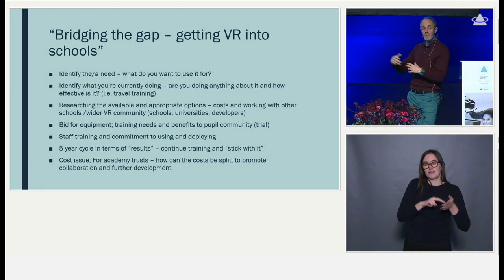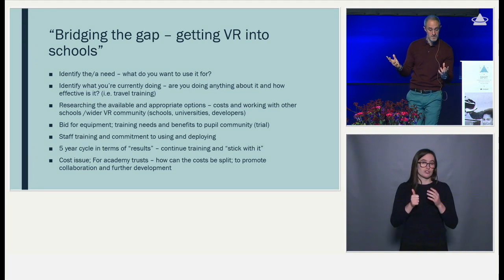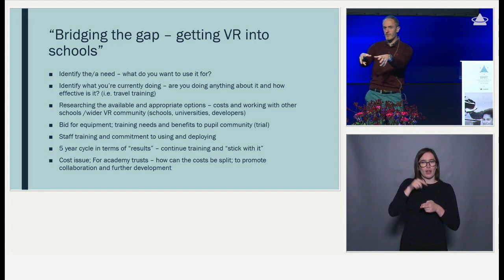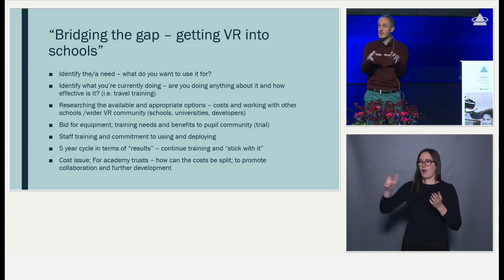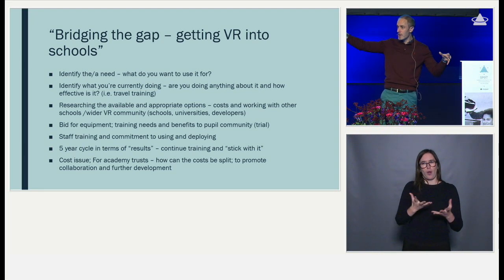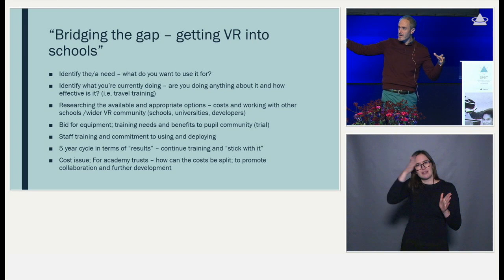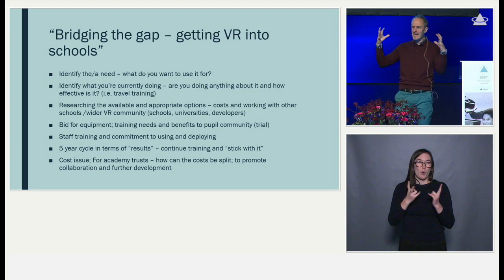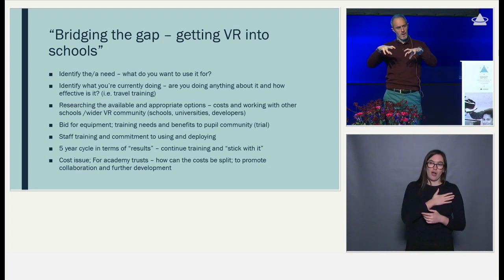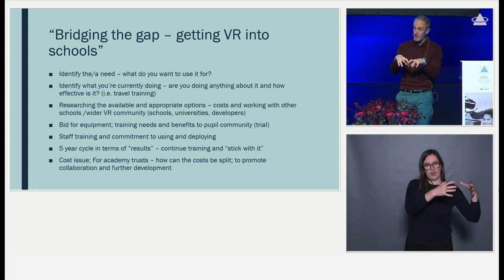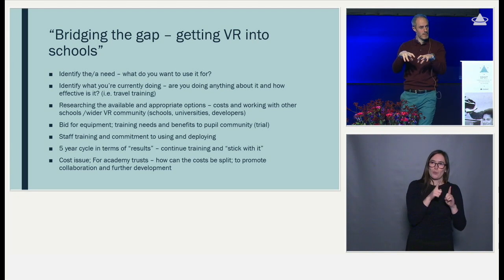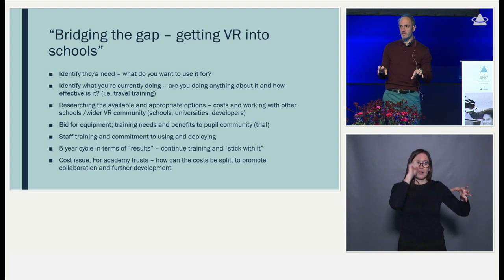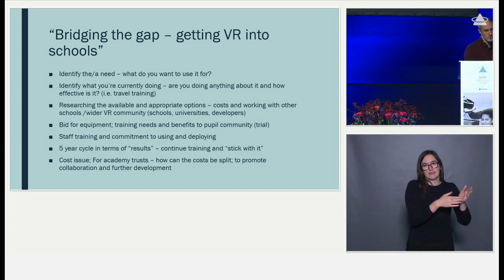The head teacher also suggested looking at a five-year cycle in terms of outcomes and results — don't just think this can be parachuted in for a few months and have a huge impact. You may need to embed it with a longer-term picture of what to expect. On the cost issue, in the UK we have academy trusts — collections of schools funded together — and the idea that a collection of schools could own technology that can be circulated between them is one way to get around the issue of cost.